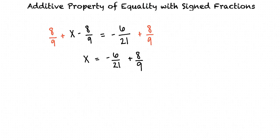This results in the equality x equals negative 6 over 21 plus 8 ninths, which gives us x by itself, but it isn't completely simplified yet. Now we have negative 6 over 21 plus 8 over 9 on the right side of the equal sign. How would we deal with that?